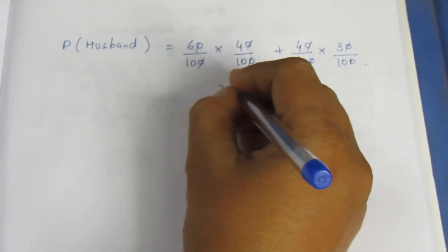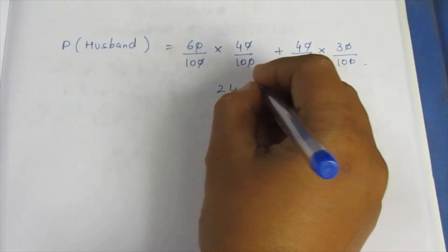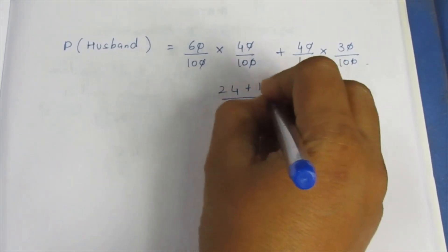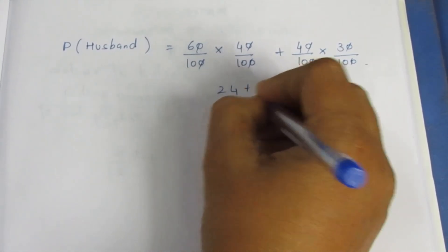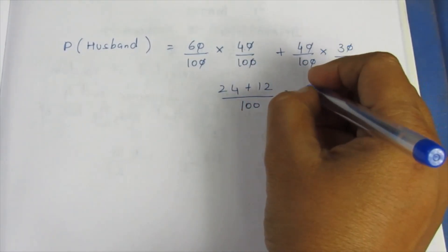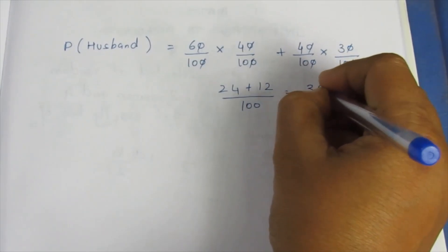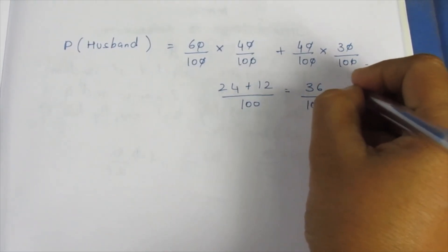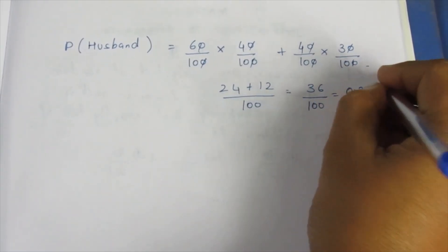After cancelling, we get 24 plus 12 by 100, which equals 36 by 100, which is 0.36.